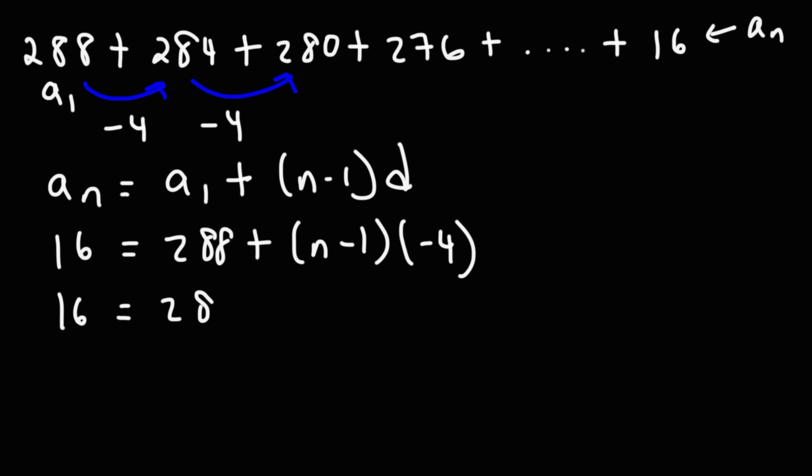So what I'm going to do now is distribute the negative 4 to n minus 1. So we're going to have negative 4n plus 4. Now, 288 plus 4 is 292.